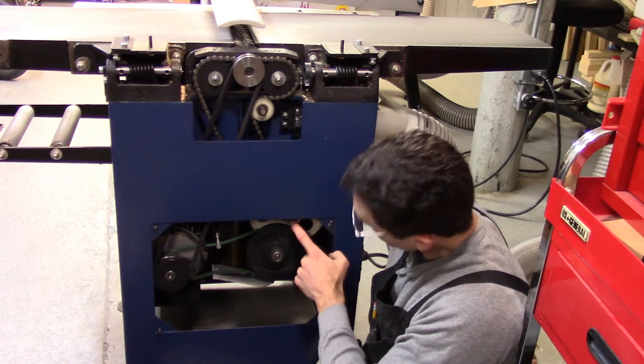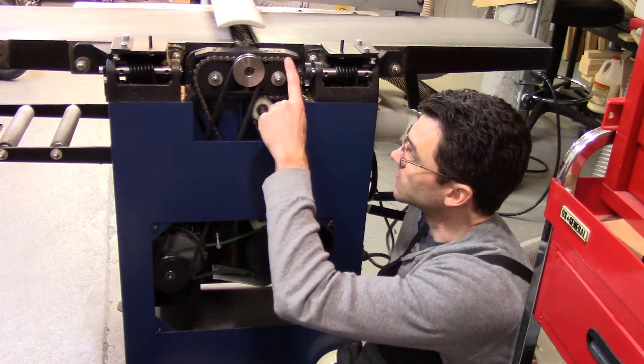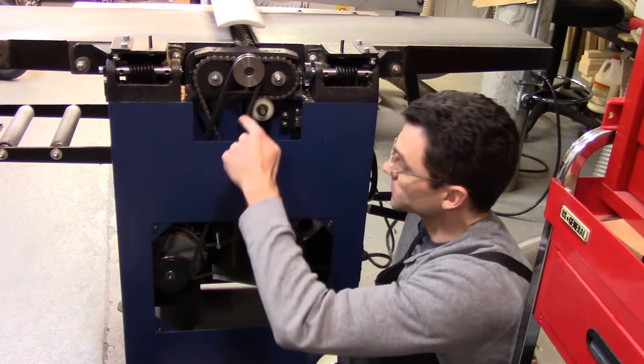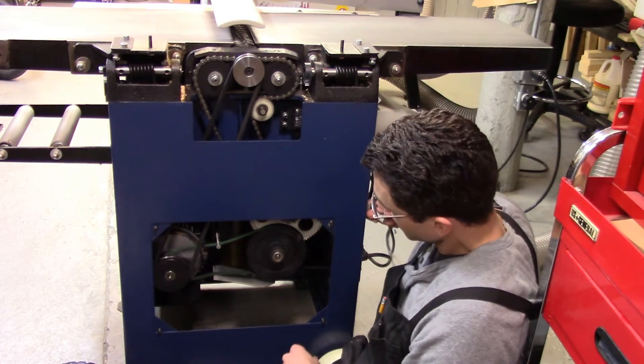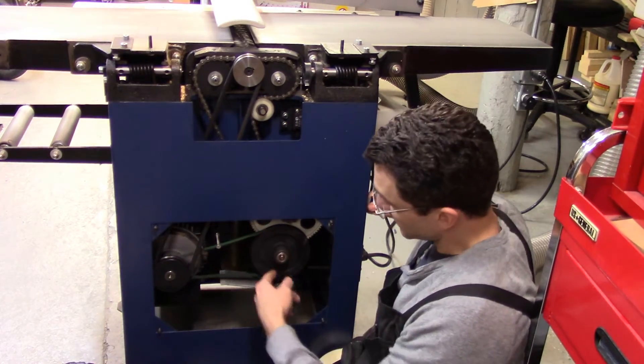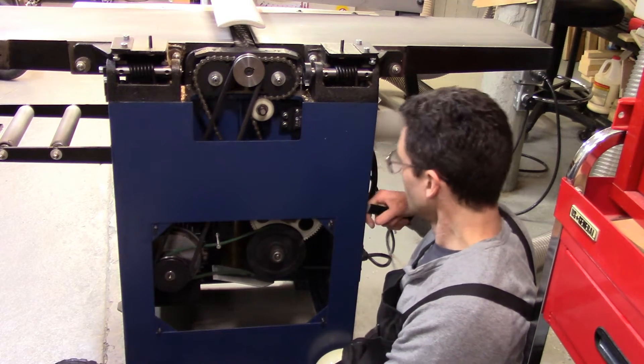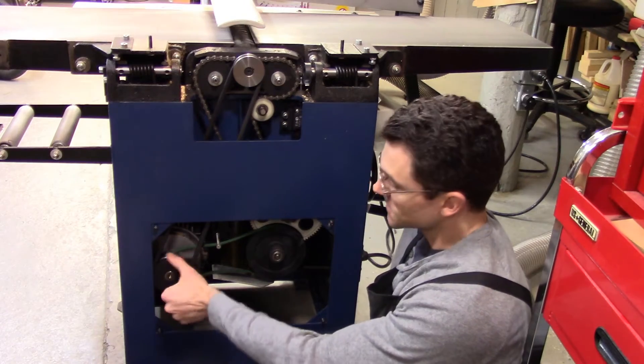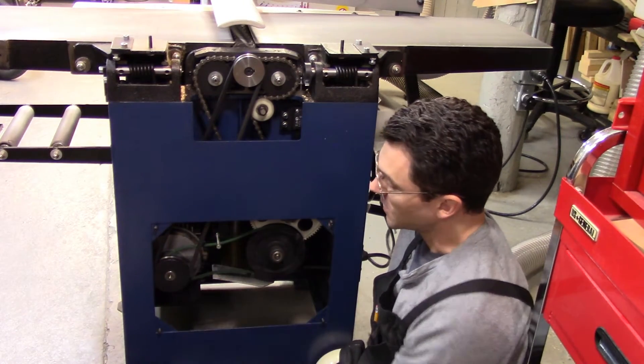This chain here starts at the bottom and loops its way around the in-feed roller as well as the out-feed roller. Then to engage it, you have this lever on a spring which moves this pulley down, engaging this little green belt. So in normal jointer mode the motor does its thing and this pulley kind of flops around in place and doesn't get driven.